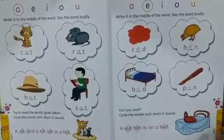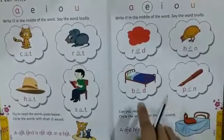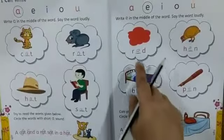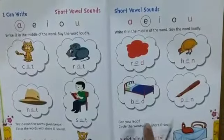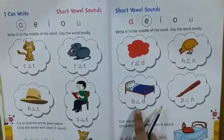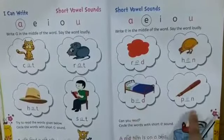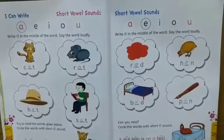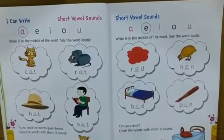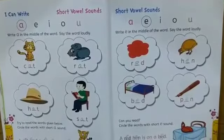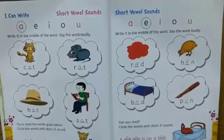Now we will write these two words. Last class we wrote red and hen into our notebook. Today we will write bed and pen into our notebook. Now take out your notebook, all of you.